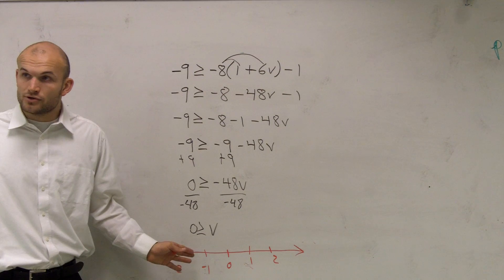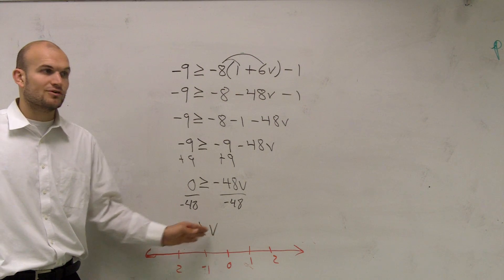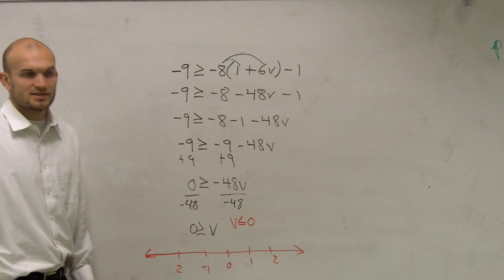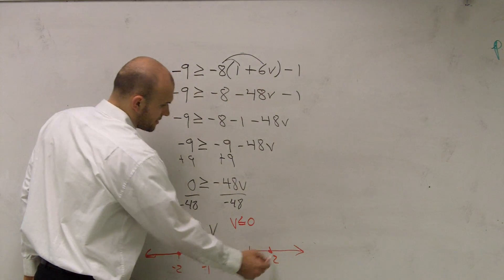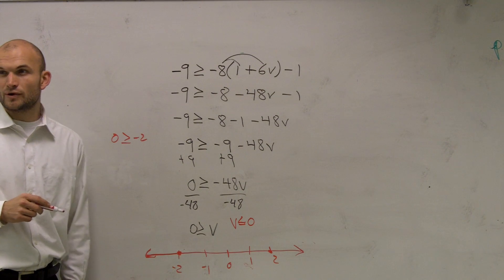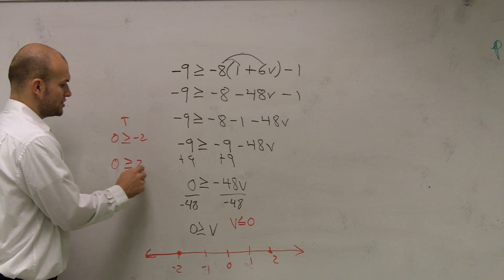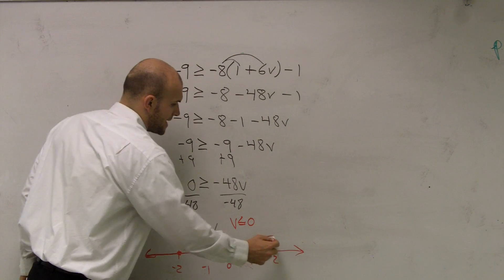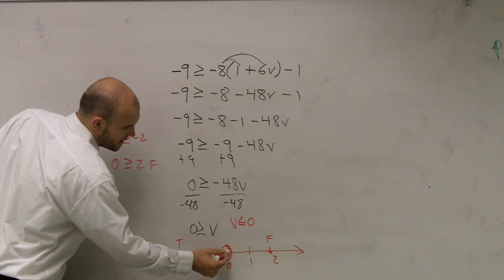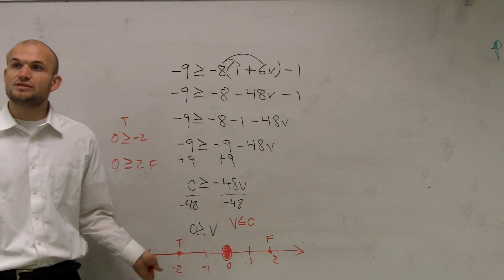So what does v represent? V represents our numbers. If I say it backwards with my variable first, all numbers which are v have to be less than or equal to 0. I can either rewrite it as v ≤ 0, or we can do our test points — let's pick negative 2 and 2. Plug both in: is 0 greater than or equal to negative 2? True. Is 0 greater than or equal to 2? That's false. So that point is true and that point is false. Our main point we're testing is 0. Since it's greater than or equal to, our shortcut is we fill that in — and whenever it's equal to, that's a closed circle. Do we shade toward the true statements or toward the false statements?